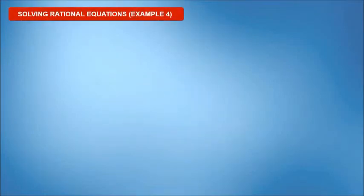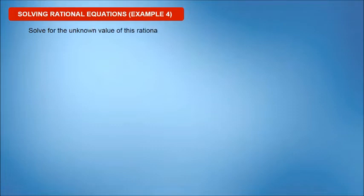Solving Rational Equations, Example number 4. Solve for the unknown value of this rational equation: x plus 6, all over x minus 3, is equal to 1 over x plus 1.